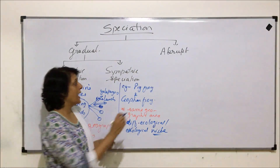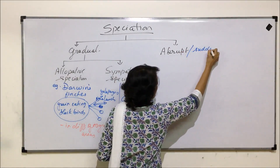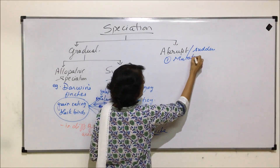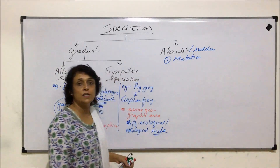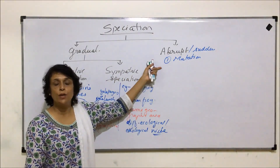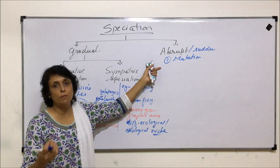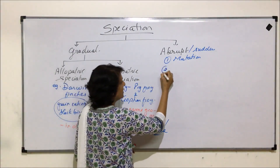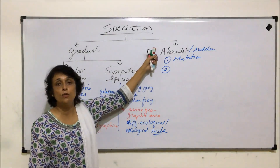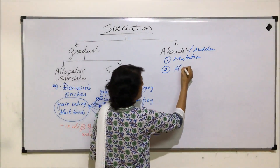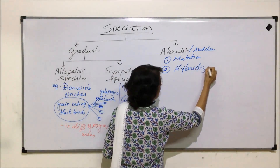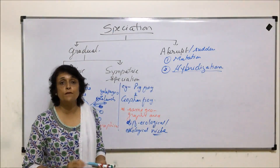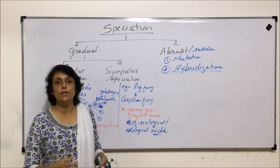Now coming to abrupt type of speciation, which as the name suggests is sudden. There are two reasons for this kind of speciation. The first is mutation — all types of mutation, for example chromosomal mutation where the chromosome number changes, can result in formation of a new species. The second reason which can result in abrupt speciation is hybridization, which is when members of different species are crossed and we get a totally different, third species.